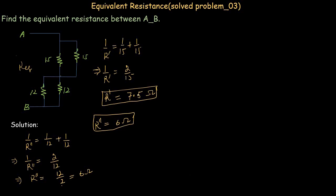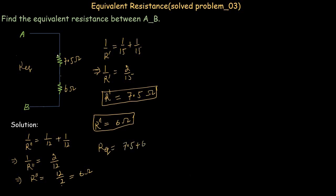Now let's replace these two pairs of resistors by their equivalents: 7.5 ohms and 6 ohms. These two equivalent resistors are connected in series, so R equivalent equals 7.5 plus 6 ohms. The equivalent resistance between these two points equals 13.5 ohms. This is a simple series-parallel circuit and its solution is 13.5 ohms.